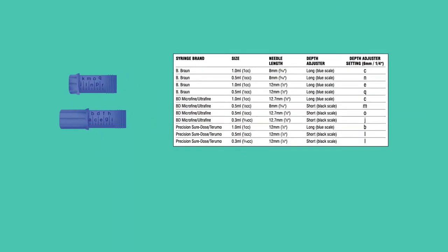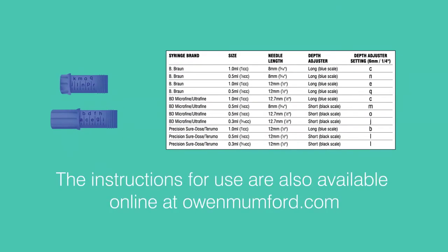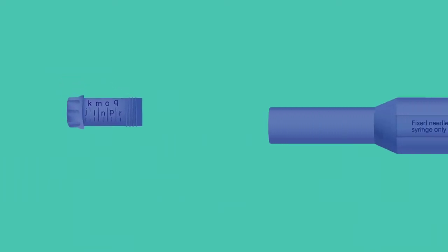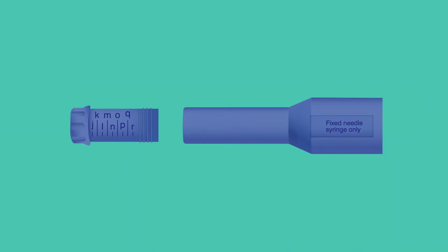There are two depth adjusters provided with your Autoject 2 device. Refer to table 1 in your instructions for use booklet to select a depth adjuster suitable for use with your syringe. Once you have located the correct depth setting, screw the corresponding depth adjuster onto the syringe housing. Note the depth adjustment scale mark for your particular syringe and screw the depth adjuster in or out until this scale mark is in line with the end of the syringe housing.